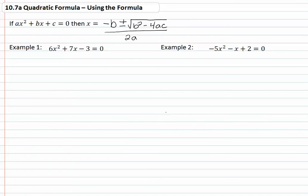Let's take a look at example one. First we want to identify what our a, b, and c are. 6 is our a, 7 is our b, and 3 is our c.